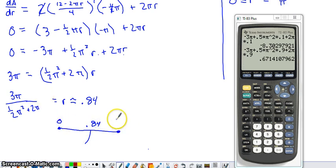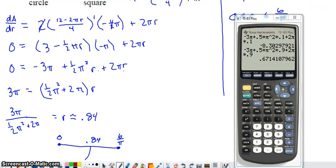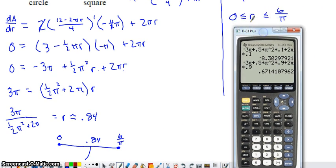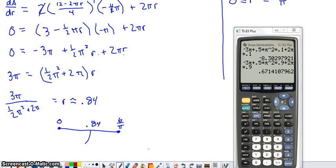I know r can't go beneath 0 or above 6/π. We said that up here, this little interval is just off the top of the screen behind my calculator now. R has to be between those two values. The only time the sign of the derivative of A with respect to our radius can change is as we cross the value of .84.